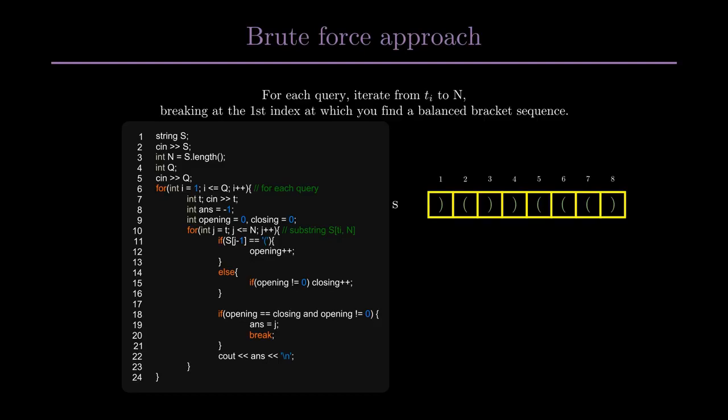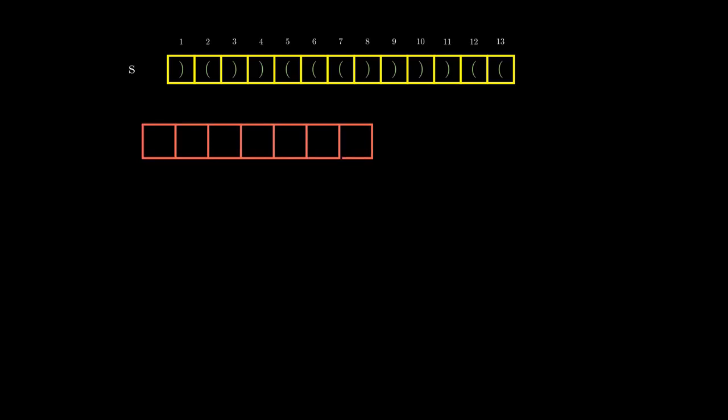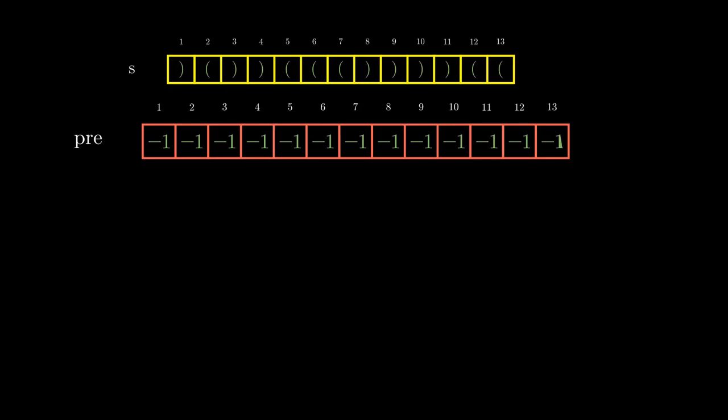The time complexity of this approach is q times n, which will exceed the time limit. So how to optimize this? What we can do is pre-compute the answer for each and every possible index from 1 to n. When we are given a query, we can just answer that query from our pre-computed array. So we initialize an array pre with -1, and in the end pre[i] would store the answer when the query is i.